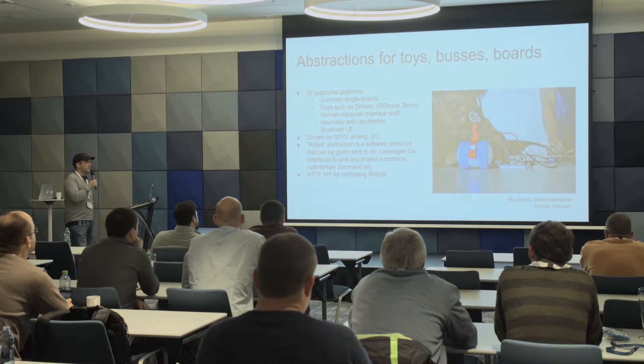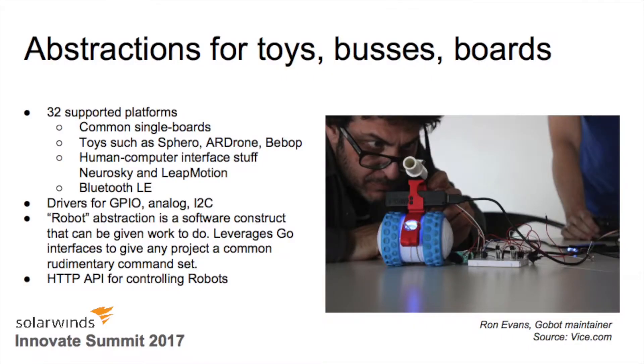GoBot provides abstractions for toys, for buses, for boards. You can control really serious things like inter-integrated circuits, or I2C. And you can control strange things like NeuroSkies — it's like this weird headset that reads your brainwaves and helps you meditate or become rich or something like that. There's also Spheros and drones. You can do things with Bluetooth. It's basically this big grab bag of electronic controlling stuff, including drivers for GPIO, analog, things like that. It's got this cool robot abstraction so you can set up a bunch of different things that something can do, and then you can even talk over a web server and tell your drone to go answer your IoT doorbell when the UPS man comes.